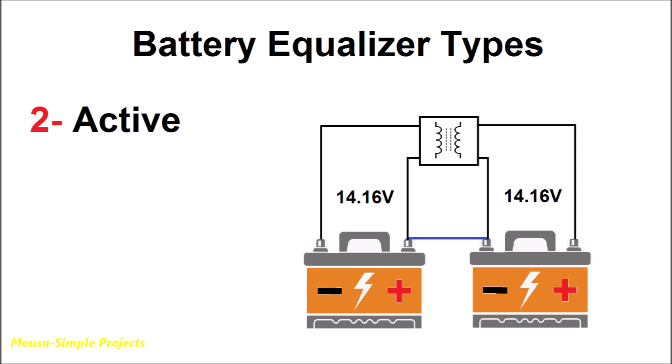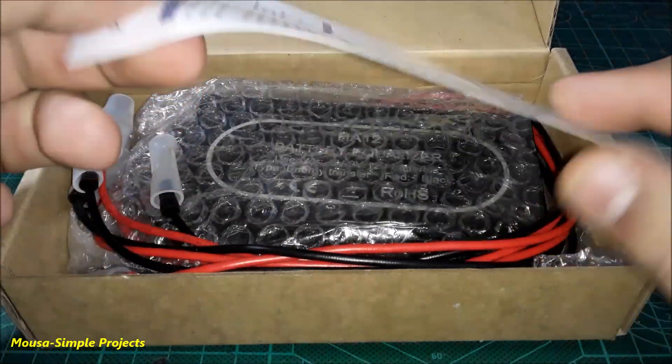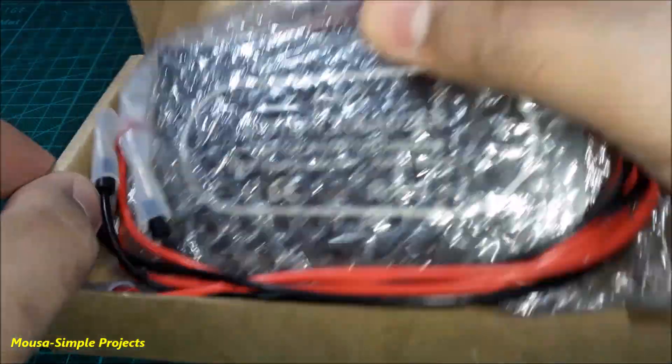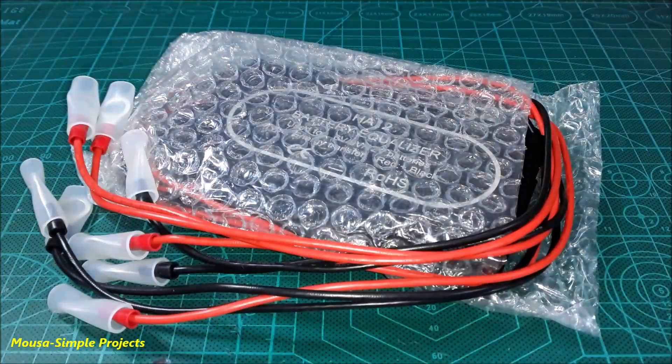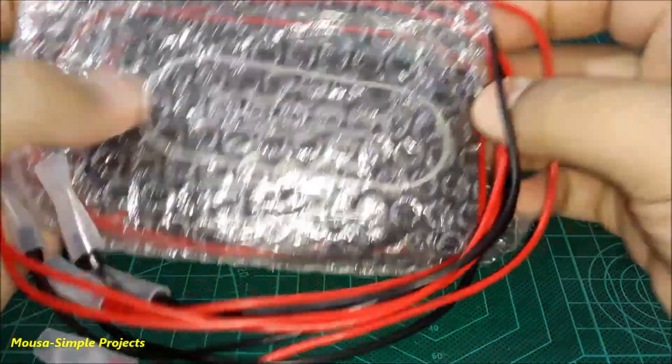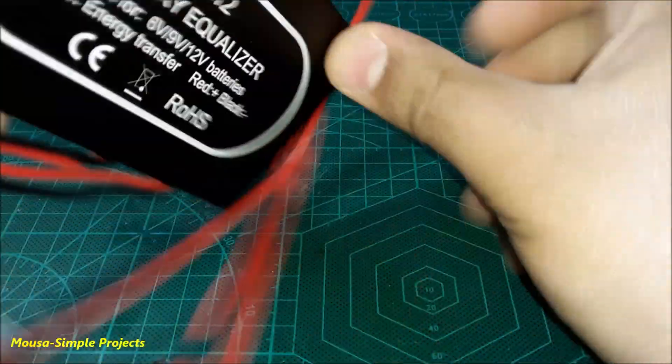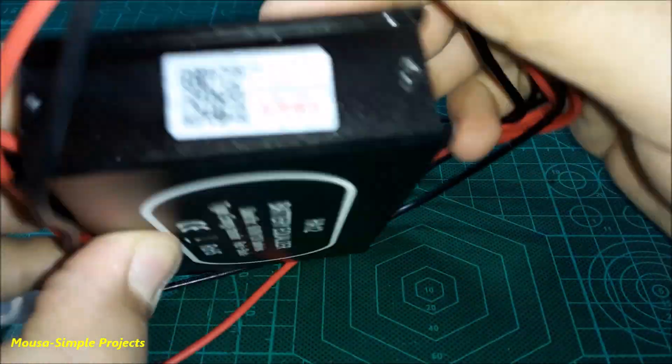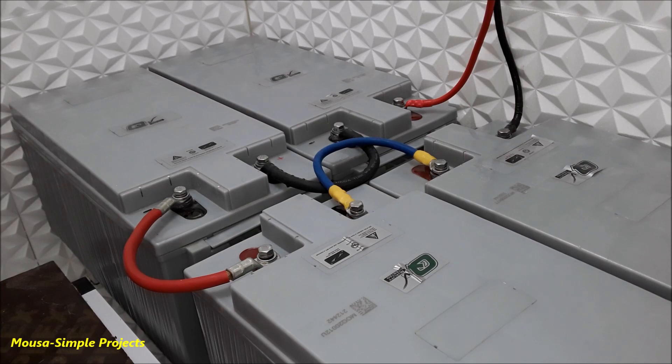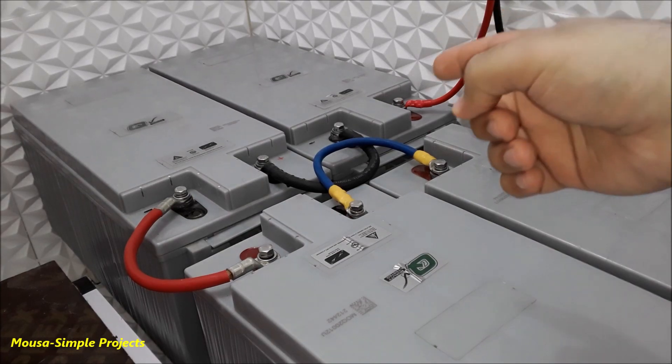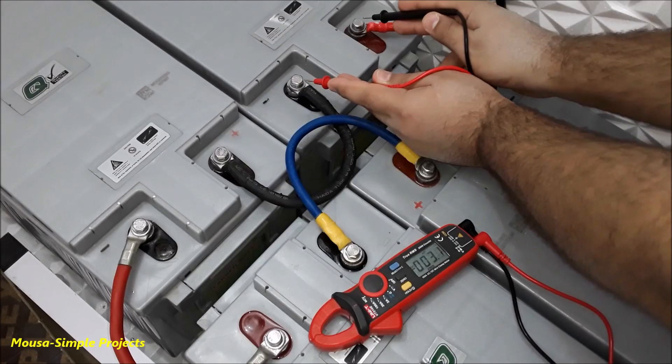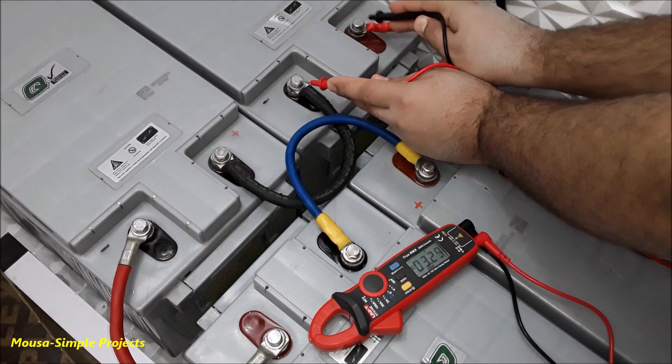I bought this active battery equalizer for about 60 bucks. It can be connected to four batteries to balance the voltage of them. It also has Bluetooth connection to show you the voltage of each battery on your Android phone. Here I have four 12 volt solar batteries connected together in series. As you can see, the voltage of this battery is 13.02 volts, this one 12.99, this one also 12.99, but the last one is 12.66 volts.